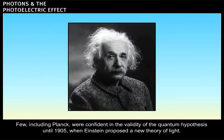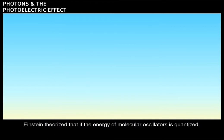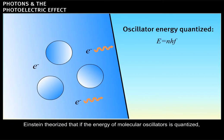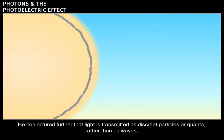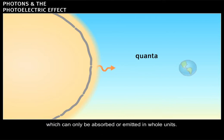Few, including Planck, were confident in the validity of the quantum hypothesis until 1905 when Einstein proposed a new theory of light. Einstein theorized that if the energy of molecular oscillators is quantized, then the emitted radiation must also be quantized. He conjectured further that light is transmitted as discrete particles, or quanta, rather than as waves, which can only be absorbed or emitted in whole units.